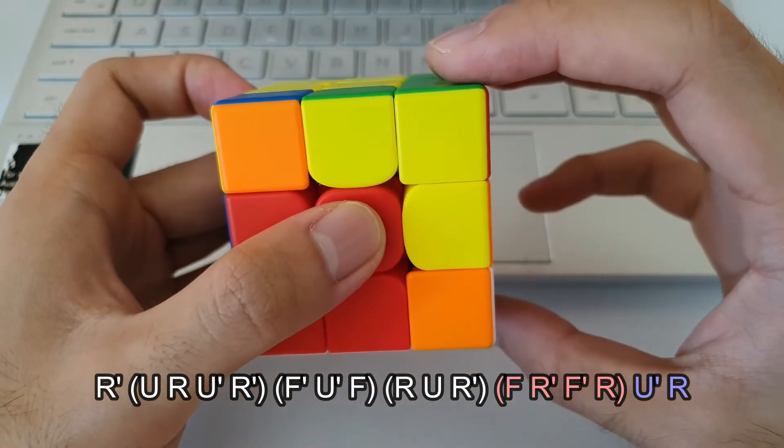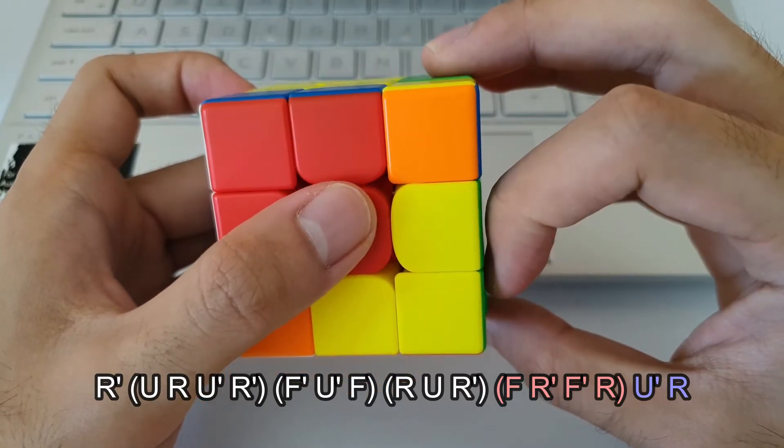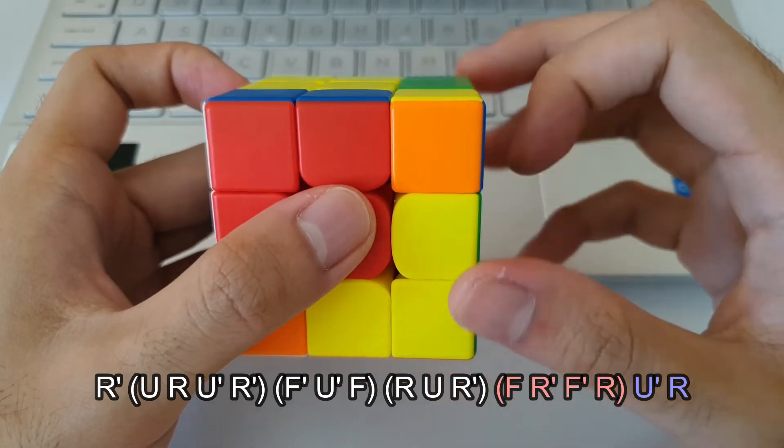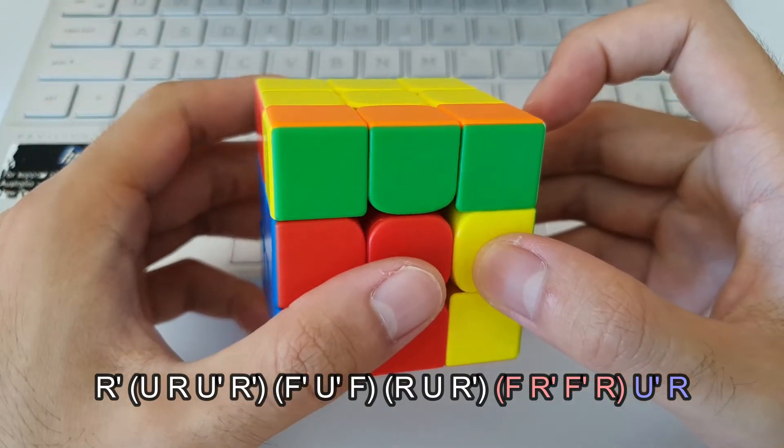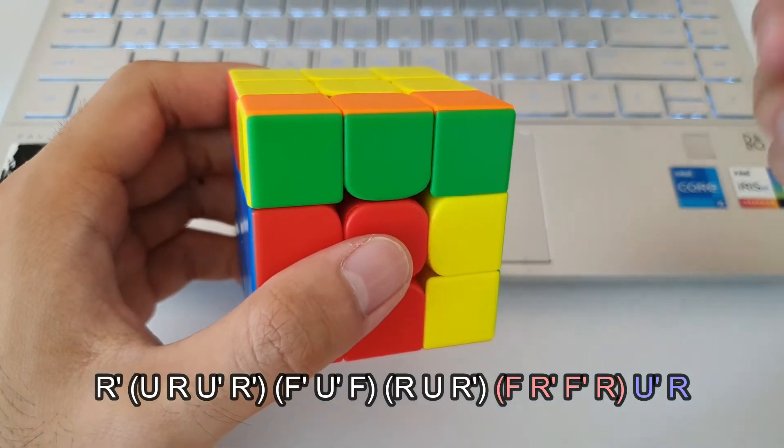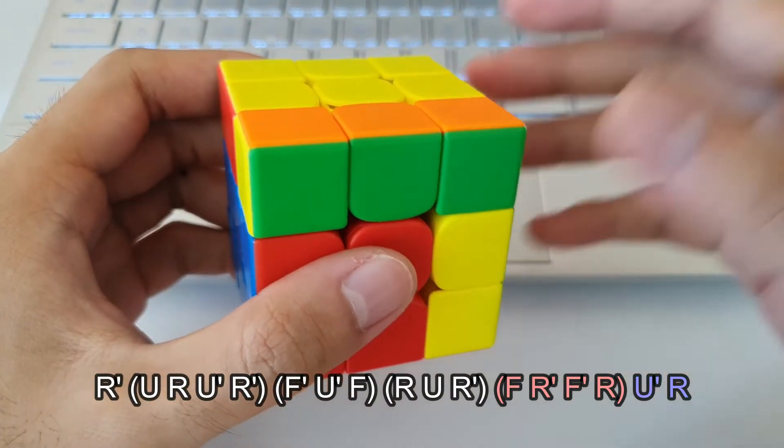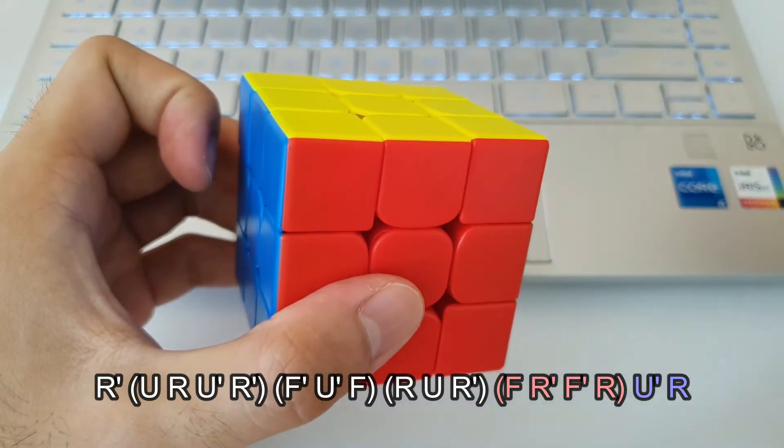Followed by an inverse sledge. So I like to start off the inverse sledge with an F move like this, because my hands will already be set up to that. Finish off the inverse sledge. And at this stage, you can remember the last two moves being U' R, or otherwise, you can just match up the colors. It's only two moves, it'll be pretty easy to match up the colors and solve in that way.